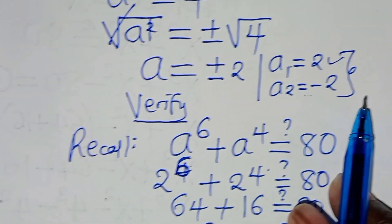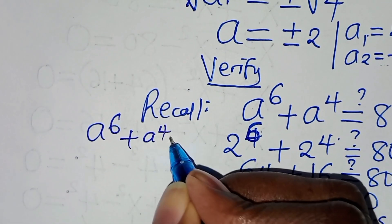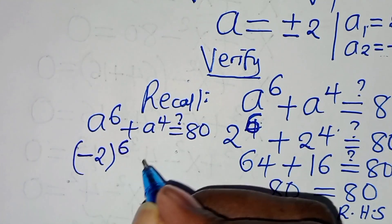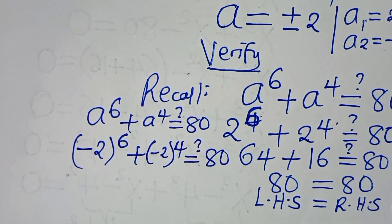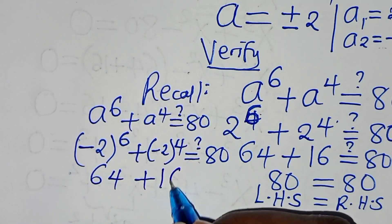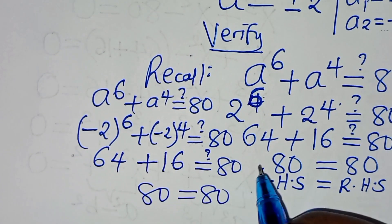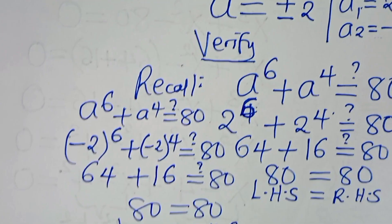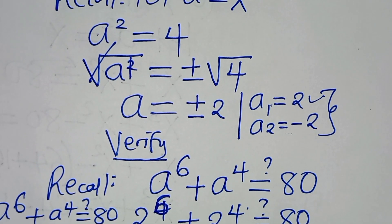Checking a₂ equals negative 2: (−2) to the power of 6 plus (−2) to the power of 4 equals 64 plus 16 equals 80, which equals 80. The left-hand side equals the right-hand side, so a₁ and a₂ both satisfy the equation. Therefore the solutions are a equals 2 and a equals negative 2.